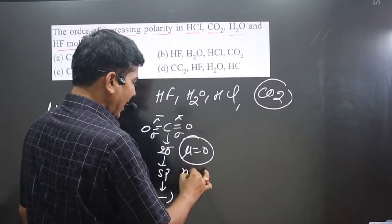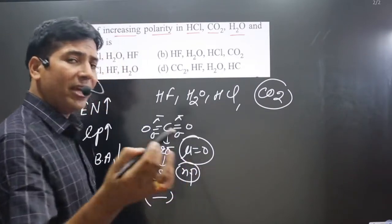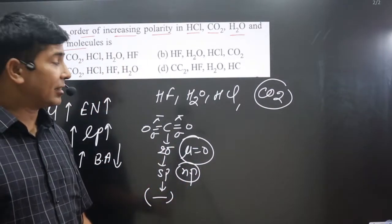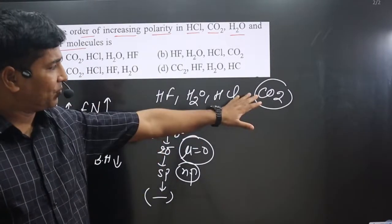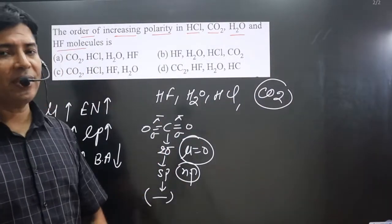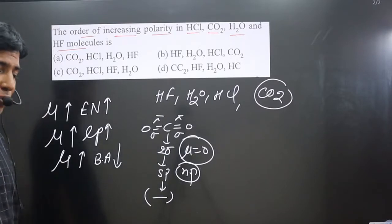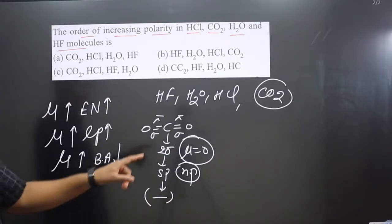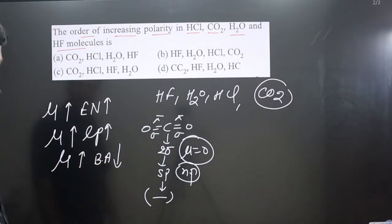Therefore CO2 is non-polar by nature — it does not have any polarity. Least polarity, in fact no polarity at all. It is non-polar because it has a linear shape and its dipole moment is 0.